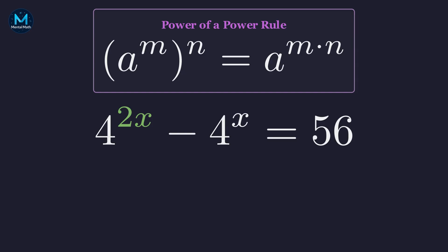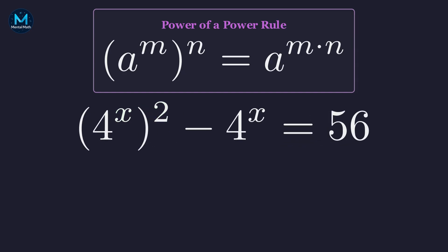Now, here's the clever part. 2x is the same as x times 2, which lets us rewrite this in a really useful way. We can write this as 4 to the x, all squared. And suddenly, we've revealed a hidden quadratic structure.